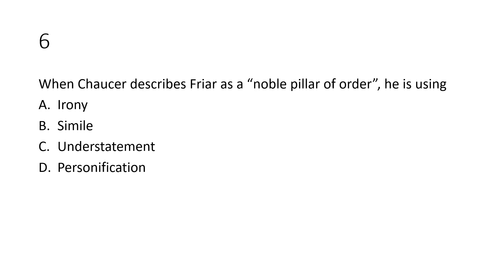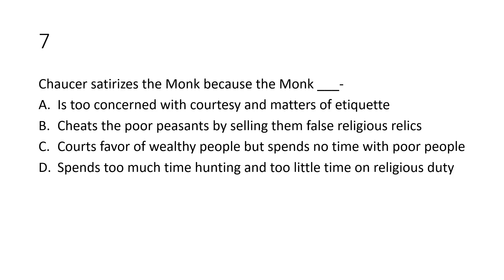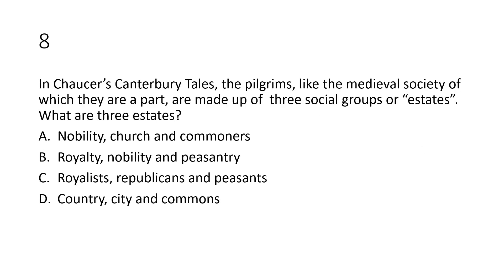Question number six: When Chaucer describes the Friar as 'a noble pillar of order,' he is using — [irony/satire]. Question number seven: Chaucer satirizes the Monk because the Monk: option A, is too concerned with courtesy and matters of etiquette; option B, cheats the poor peasants by selling them false religious relics; option C, courts favor of wealthy people but spends no time with poor people; option D, spends too much time hunting and too little time on religious duty.